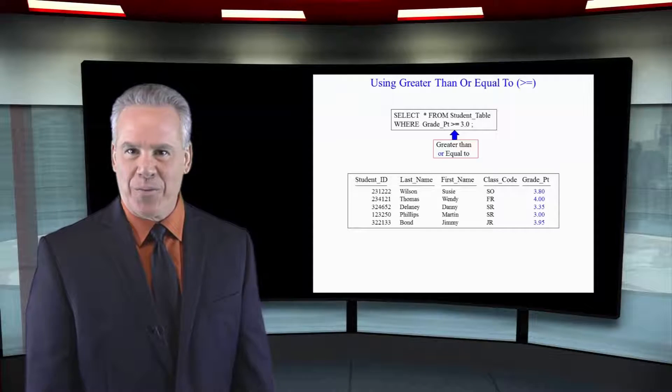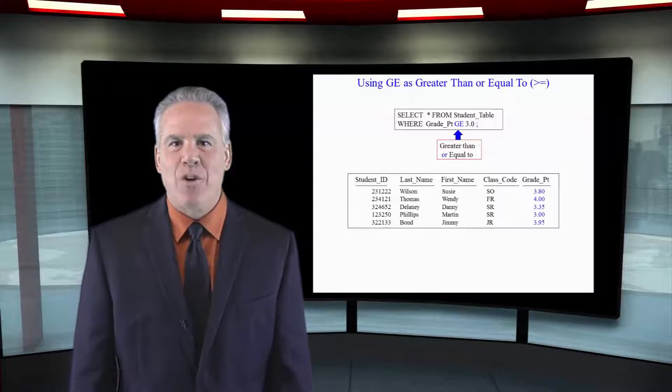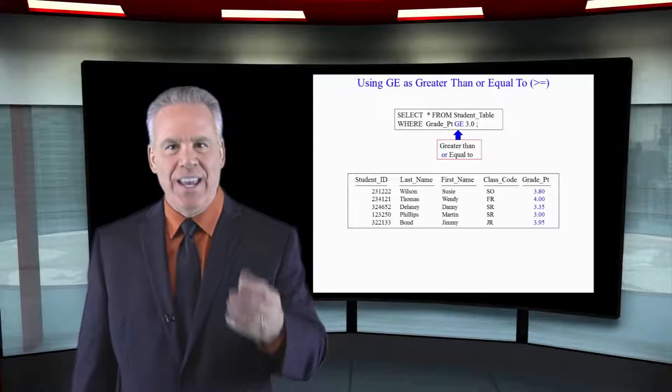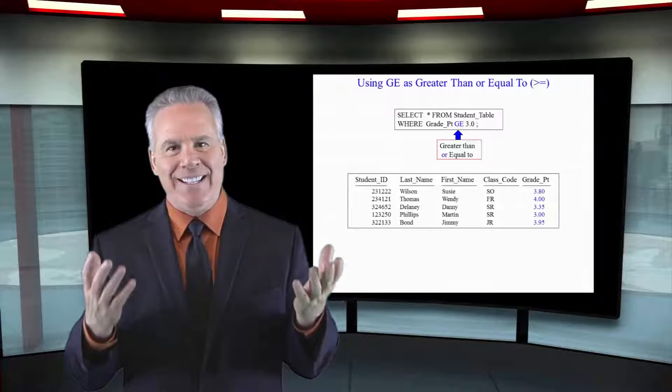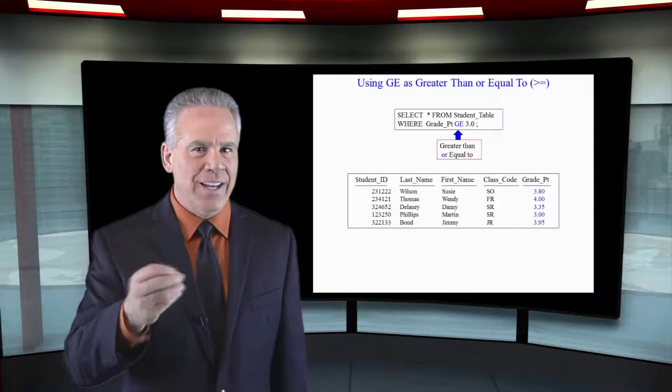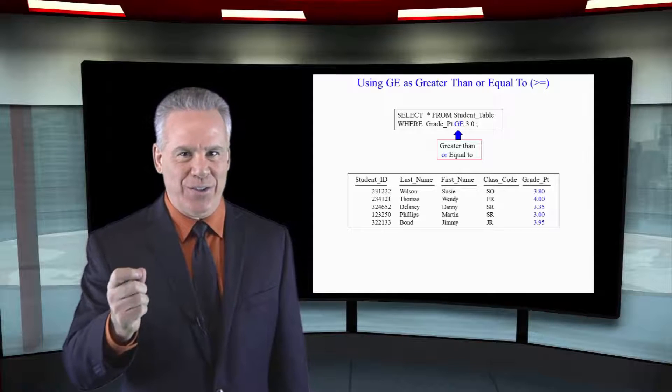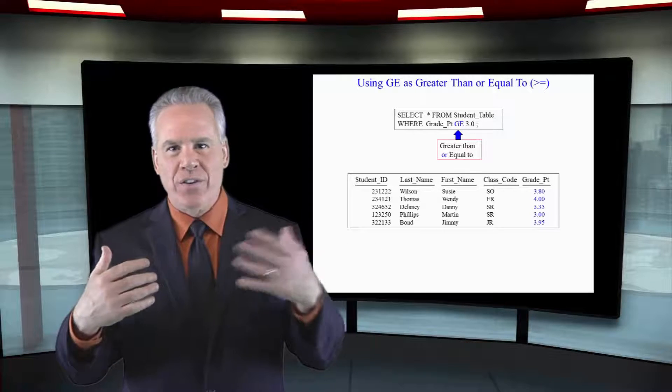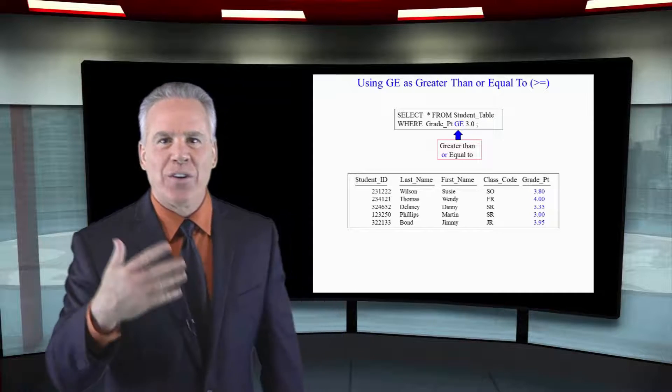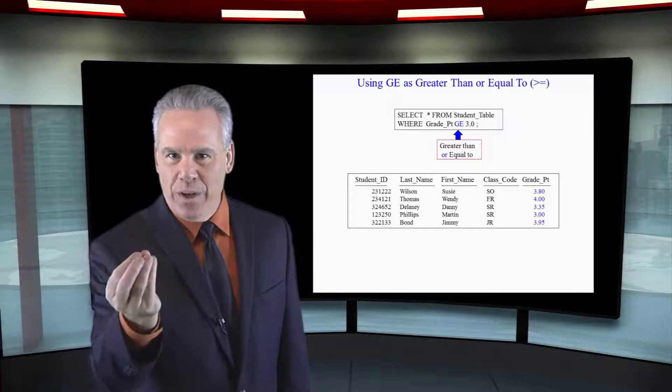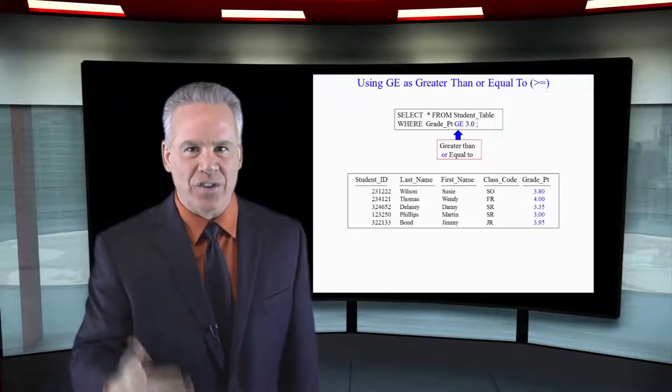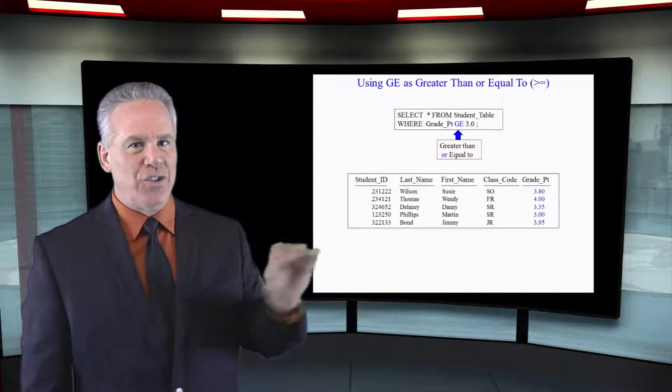Some databases have what are called extensions. Here's an extension that will work on a few databases: GE for greater than or equal. That's not what's called ANSI standard. The American National Standards Institute got with all the vendors and said, I'm going to show you all the commands that we think are the standard way of doing things. Most of them follow it, but they do have some extensions. I do not suggest you use this for greater than or equal.